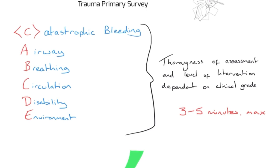We're trying to keep it very generalized so it can be appropriate for everybody to dip your toes into what a primary survey is. It should take no more than three to five minutes realistically - that's including the interventions, including for example putting a pelvic binder on during your circulation assessment. This isn't something that should be taking 40 minutes to complete. We are trying to find and fix immediately life-threatening problems only.